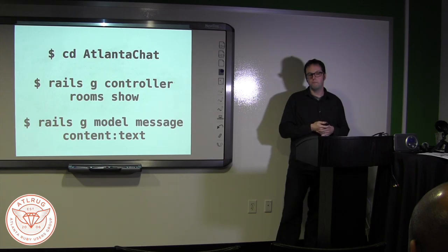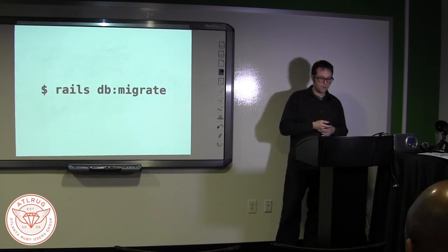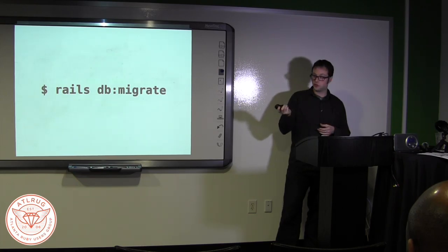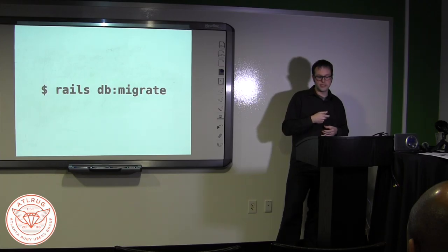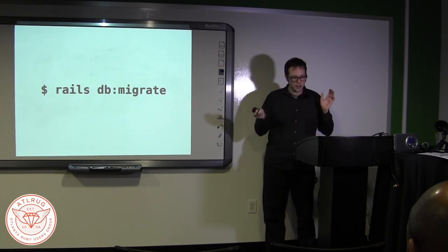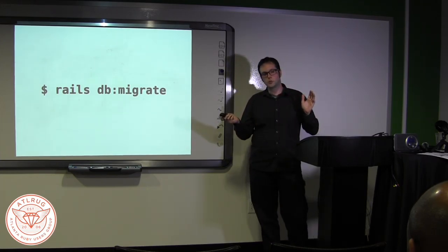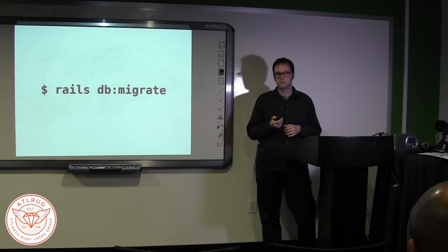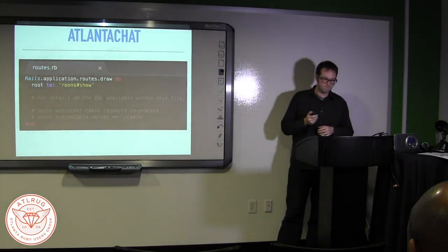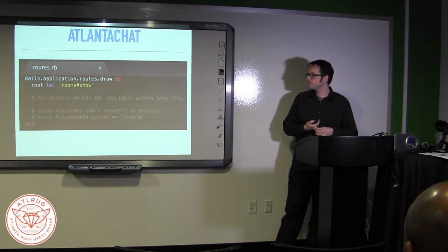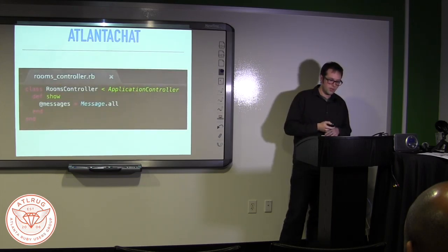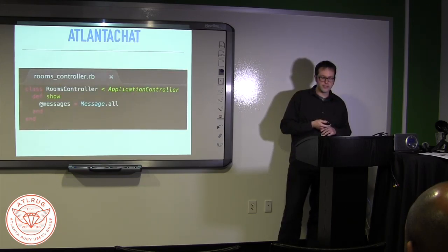Now that we've created our app, let's jump in. We're going to get a room controller with one show action and a message model with a text column called content to back it up. Before we jump into our code, let's migrate our database. As Al mentioned too, notice that this command starts with Rails and not rake. This Rails 5 upgrade is aimed at making the framework more beginner-friendly. But everywhere rake was working before will still work. So you don't need to use it.